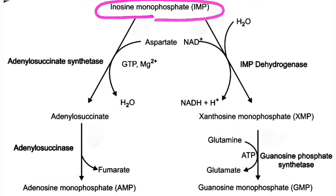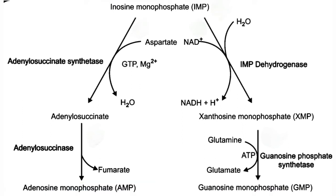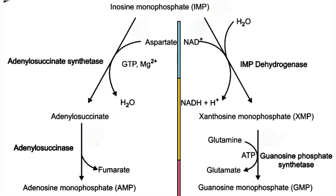IMP is the parent purine nucleotide from which other purine nucleotides like AMP and GMP can be synthesized. For IMP conversion to AMP: IMP is first converted to Adenylsuccinate by the enzyme Adenylsuccinate Synthetase, requiring GTP and aspartate. Adenylsuccinate is then converted to AMP with release of one fumarate molecule. For IMP conversion to GMP: IMP is acted upon by IMP Dehydrogenase to form Xanthine Monophosphate (XMP), which is then converted to GMP by GMP Synthetase, requiring glutamine and ATP.